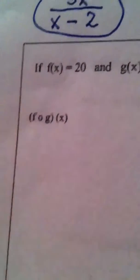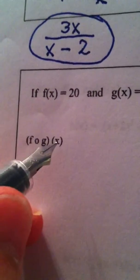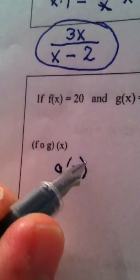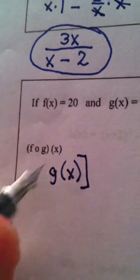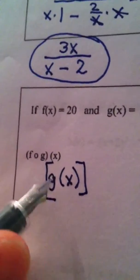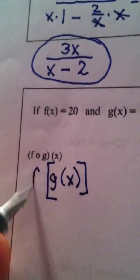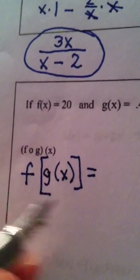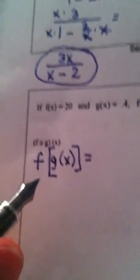So in other words, I'm going to find g of x first, then I'm going to put that answer into f to get my final answer for this question.